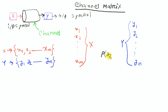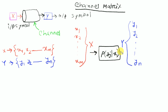The probability P(yj | xi) is called the transition probability. This transition probability defines each possible input-to-output path. That means this possible input-to-output path is defined by the transition probability.